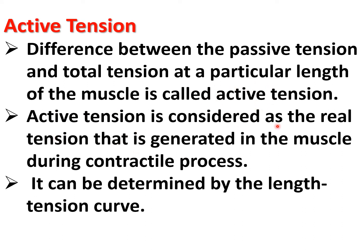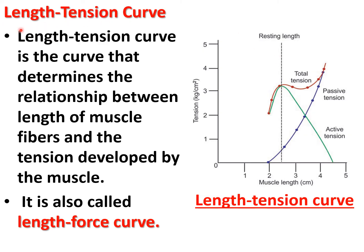Active tension is considered the real tension generated in the muscle during the contractile process, and it can be determined by the length tension curve. The length tension curve is the curve that determines the relationship between the length of the muscle fiber and the tension developed by the muscle. It is also known as the length-force curve.